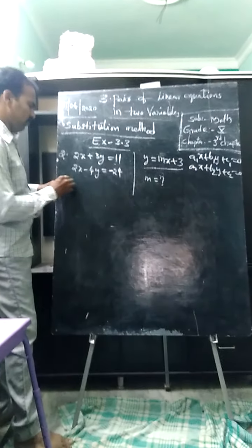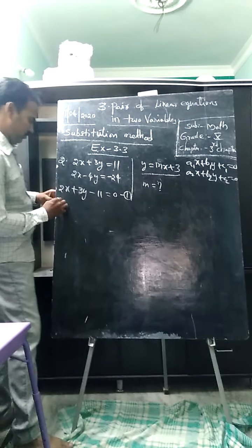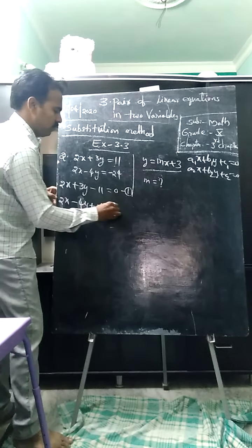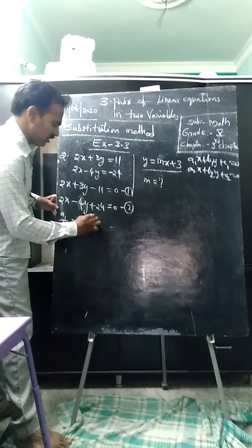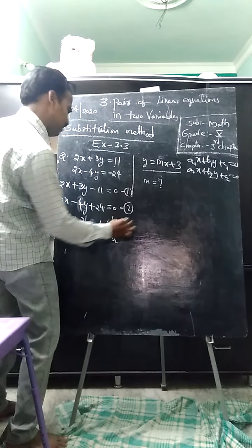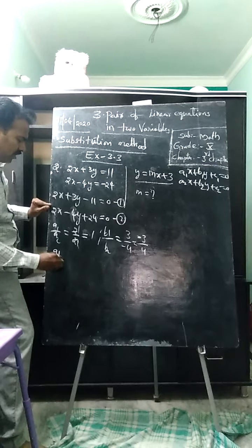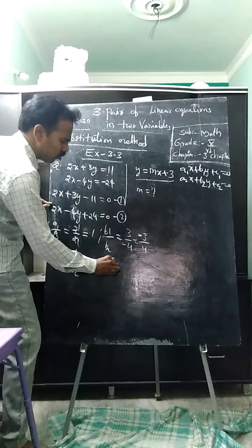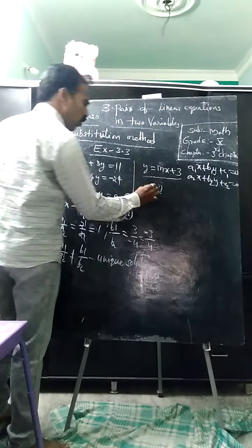Now we have equation 1 and equation 2. Find a1 by a2 — that is 2 by 2, which equals 1. Find b1 by b2 — that is 3 by minus 4. The denominator should never contain a negative symbol. From this we can conclude: a1 by a2 is not equal to b1 by b2, so we have a unique solution and we can apply any algebraic method.